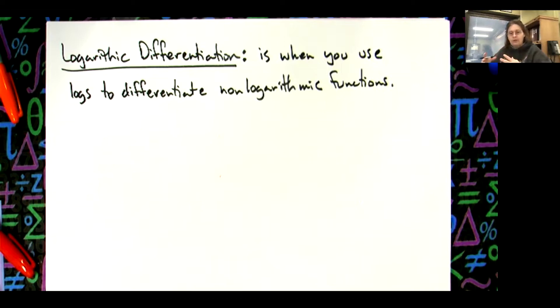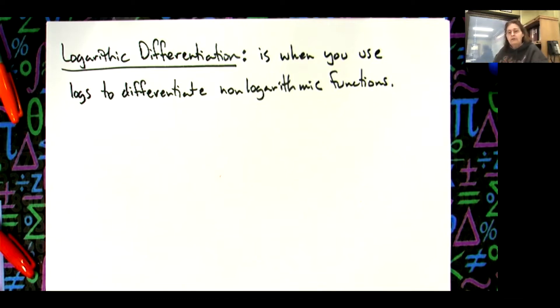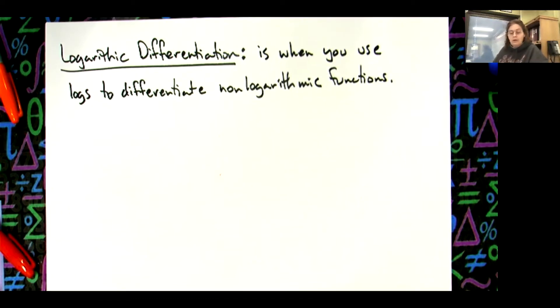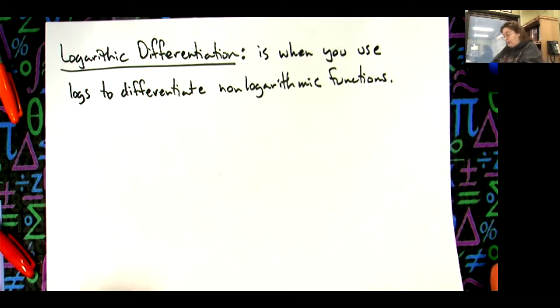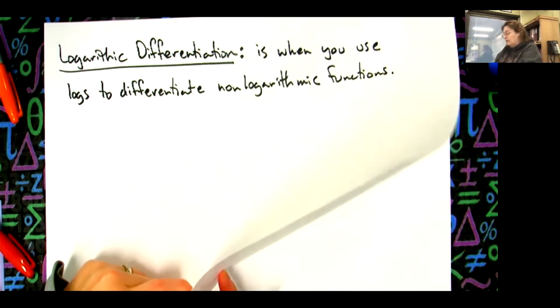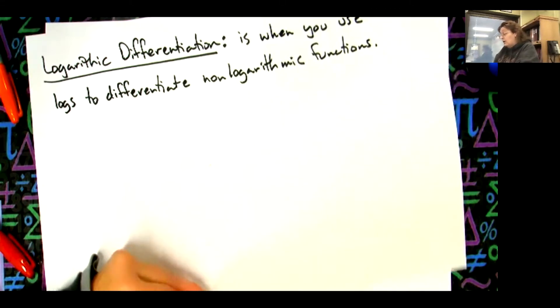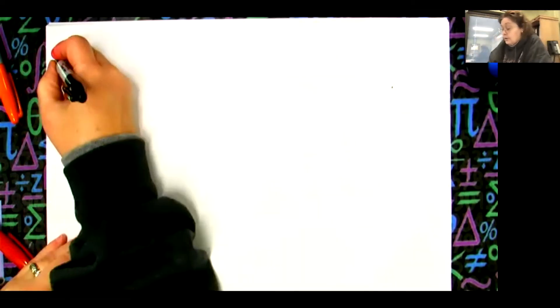So if we take a complicated rational expression and take the log of both sides, then manipulate with our log rules, we make it a whole lot simpler — and taking that derivative is a lot easier. That's our goal. These problems are long, but if you try the quotient rule you'd have just as long.